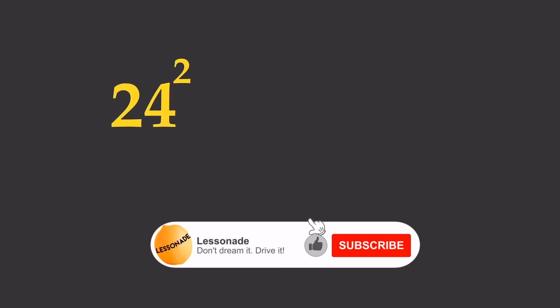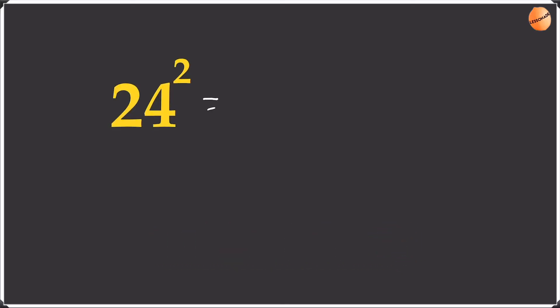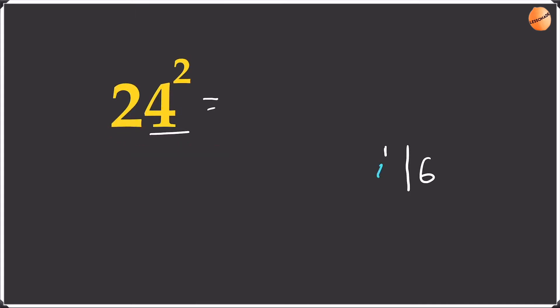Now let's move on to 24 squared. Don't worry if you don't understand yet — hopefully by the end of this example you'll get it. First, square the unit: 4 squared is 16, so we write the 6 and take the 1 as a remainder. Then find the difference — this time from 20, because the number starts with 2 — so 24 minus 20 is 4, and we write the 4 down.